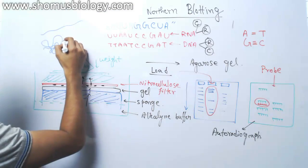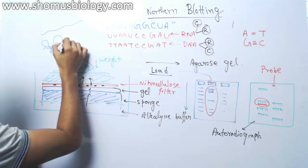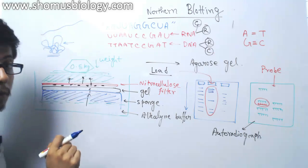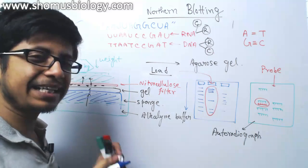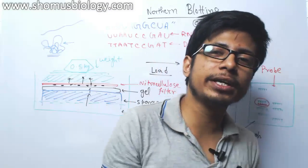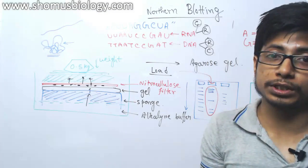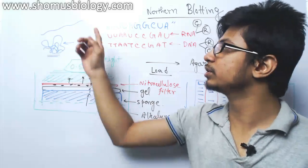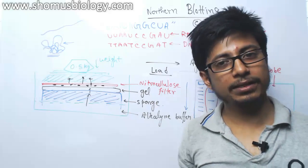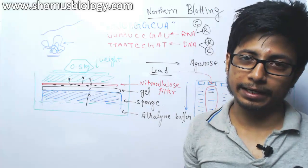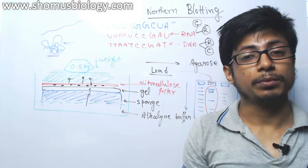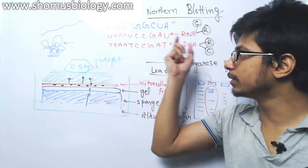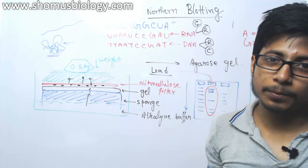How can we break the secondary structure of the RNA down into linear form? We need to use a denaturing gel electrophoresis process, which will help us resolve the secondary structure into linear RNA. Then we can separate that RNA using agarose gel electrophoresis, use the probe, and the process will be done.